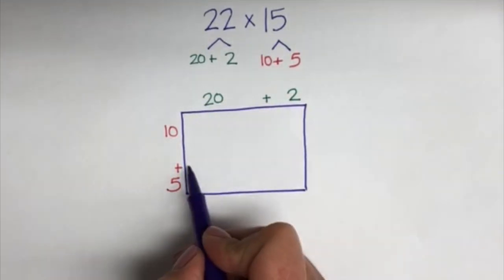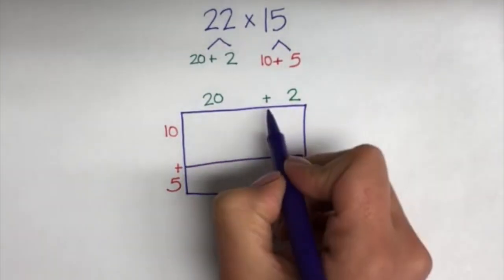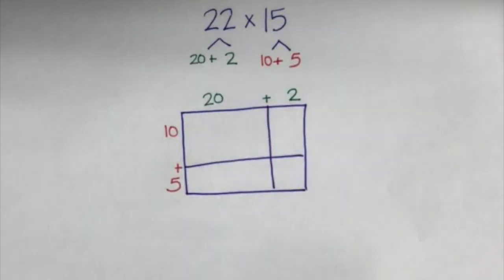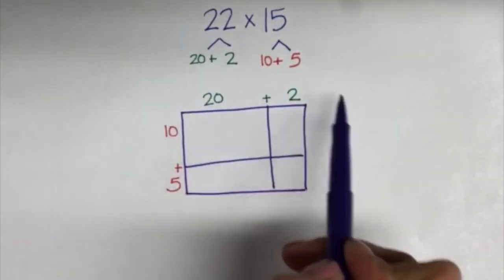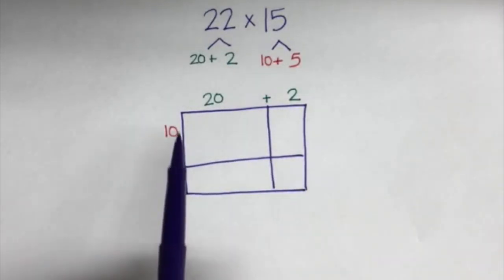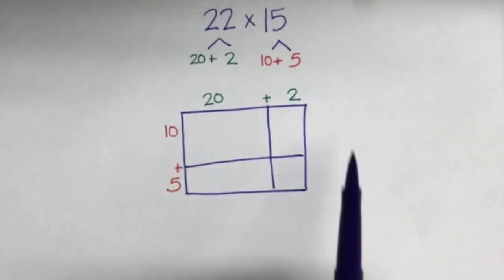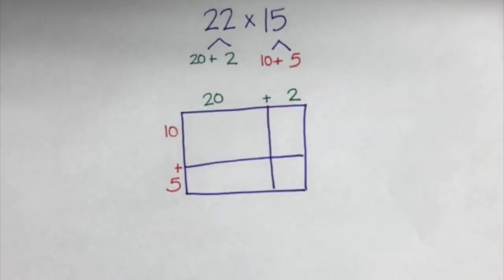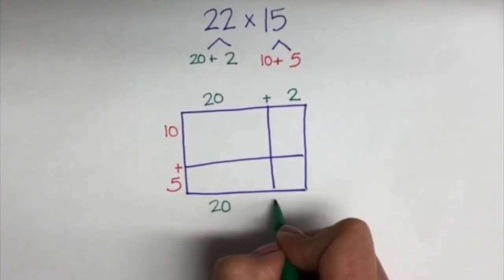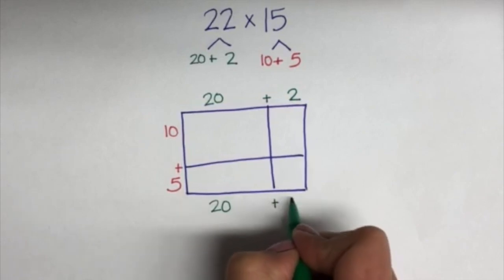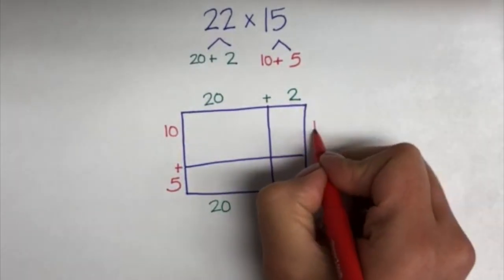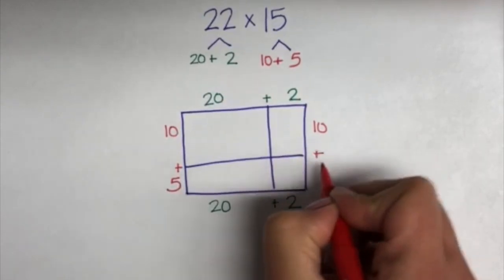Now I will make lines at the plus sign to separate my area model into four sections. As many of us know, the top and bottom sides of a rectangle and the left and right sides of a rectangle are the same. So we can rewrite the bottom as 20 plus 2, and we can rewrite the right side as 10 plus 5 to match the left.